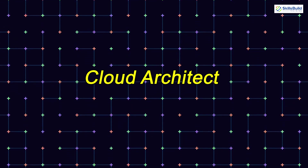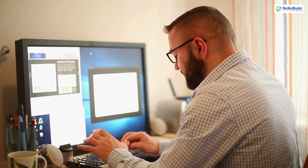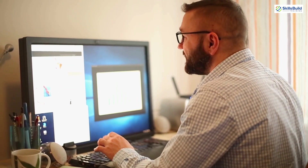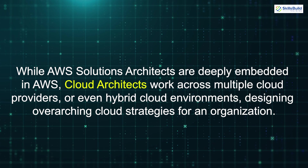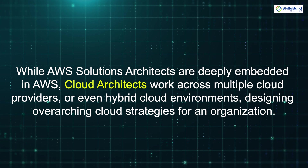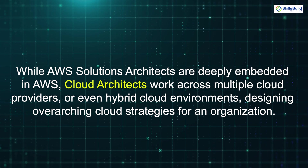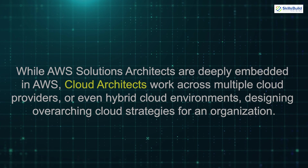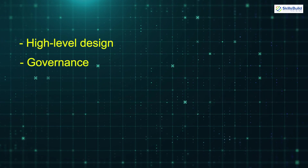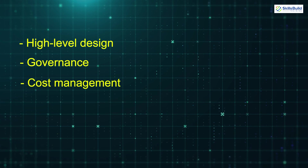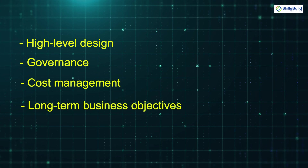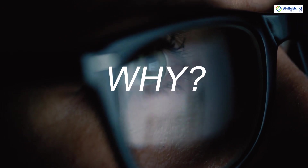Now let's compare this with the Cloud Architect role. A Cloud Architect takes on a much broader, more strategic view of cloud platforms. While AWS Solutions Architects are deeply embedded in AWS, Cloud Architects work across multiple cloud providers, or even hybrid cloud environments, designing overarching cloud strategies for an organization. Their focus is on high-level design, governance, cost management, and ensuring that cloud architectures support long-term business objectives. Essentially, while an AWS Solutions Architect is focused on the how of building solutions, a Cloud Architect is focused on the why – why a particular cloud approach aligns with broader business goals.